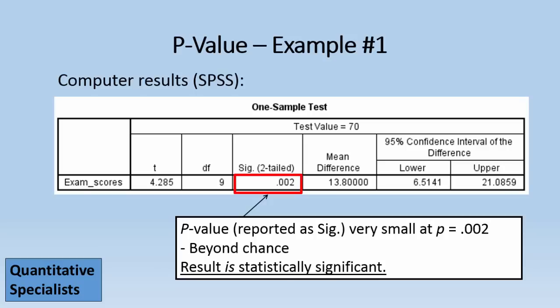Now we'll formalize this in a minute, but for now, that's beyond chance. It's quite small, so we would say that the result is statistically significant.